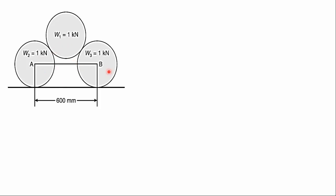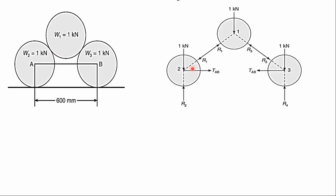We'll draw the free body diagram for each of the three spheres. For sphere number two: the self weight of one kilonewton acts downward. The sphere is touching the horizontal surface, so a vertical reaction develops, marked as R2. At the contact surface between sphere one and sphere two, an equal and opposite reaction develops, marked as R1, normal to the surface.